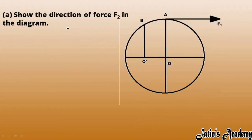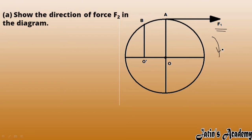For the first part, we have to show the direction of force F2. F1 is creating a clockwise moment — since O is the fixed point and F1 is the force, the body will rotate in the clockwise direction. So F1 is creating a clockwise moment.